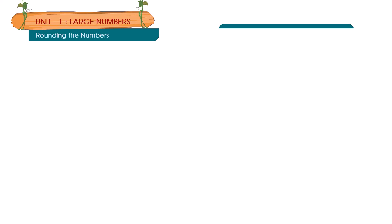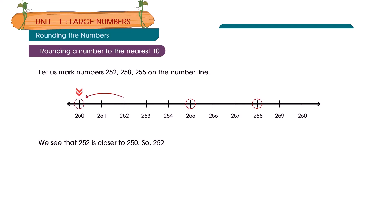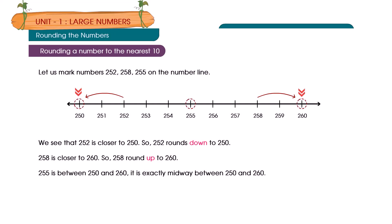Rounding numbers. Rounding a number to the nearest 10: let us mark 252, 258, and 255 on the number line. We see that 252 is closer to 250, so 252 rounds down to 250. 258 is closer to 260, so 258 rounds up to 260. 255 is exactly midway between 250 and 260, so 255 rounds up to 260.